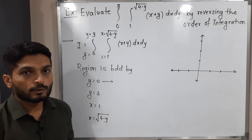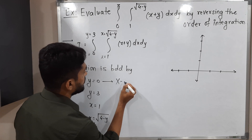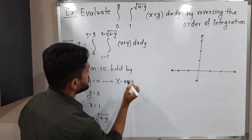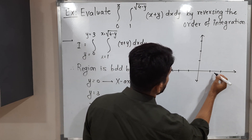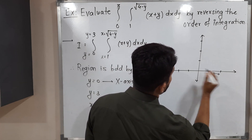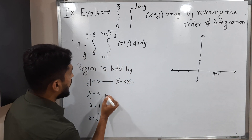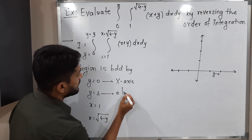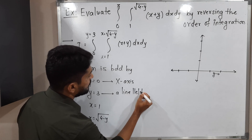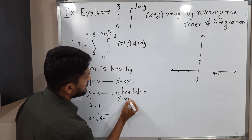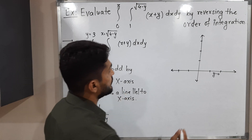y equals 0 is the equation of the x-axis. Next, y equals 3 is a line parallel to the x-axis which passes through y equals 3.